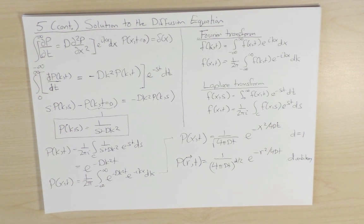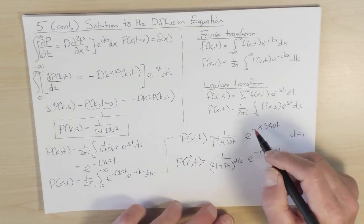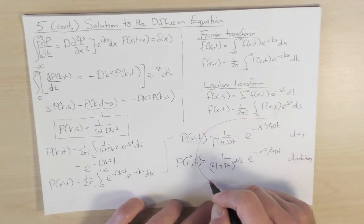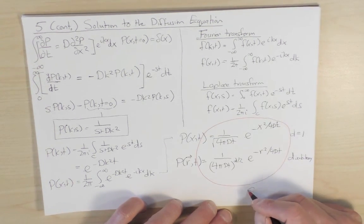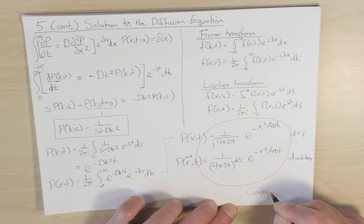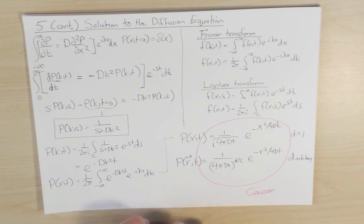So in general, notice this universal Gaussian probability distribution for the distribution of a random walk at time t.